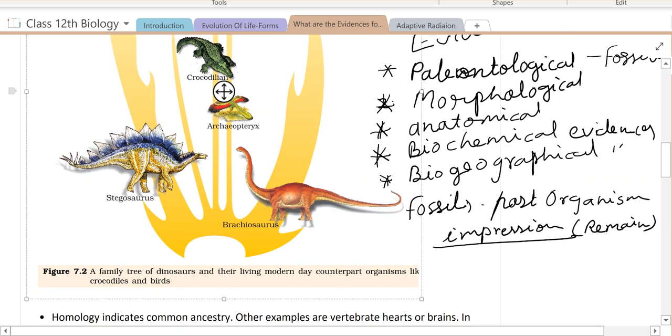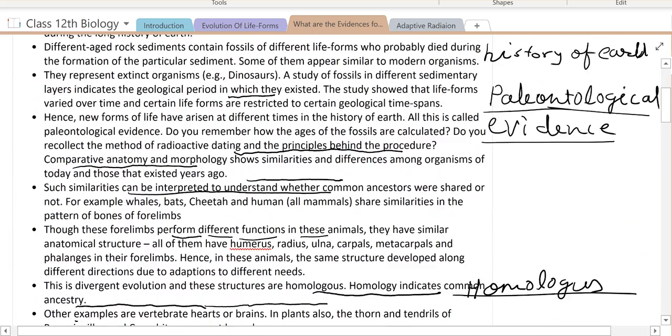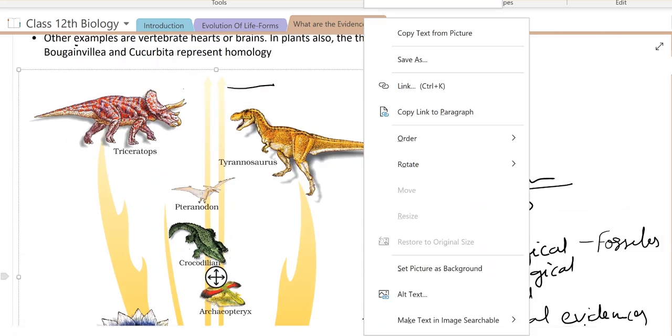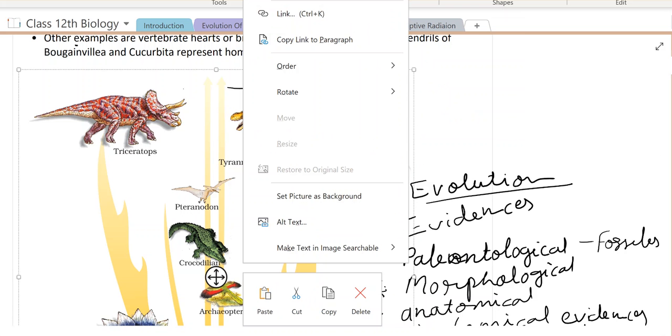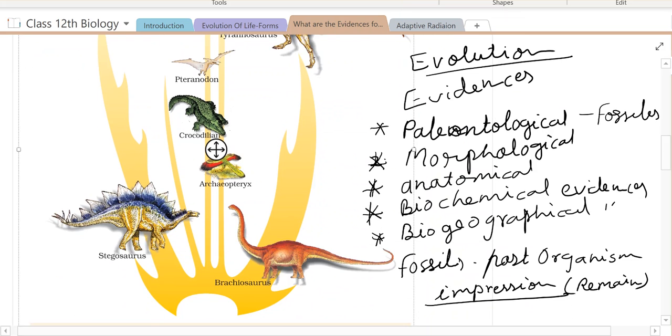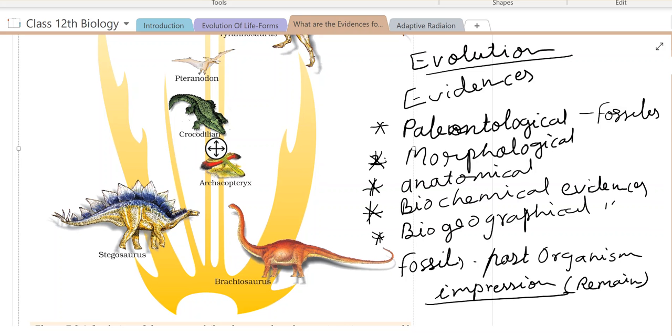See figure 7.2. These are some evidences from fossils: Triceratops, Pteranodon, Archaeopteryx, Stegosaurus, Brachiosaurus. These are some organisms whose fossils have been found in previous time periods, and they show the existence of life.